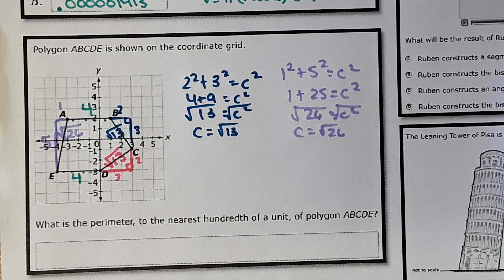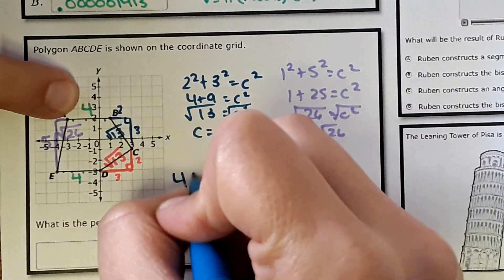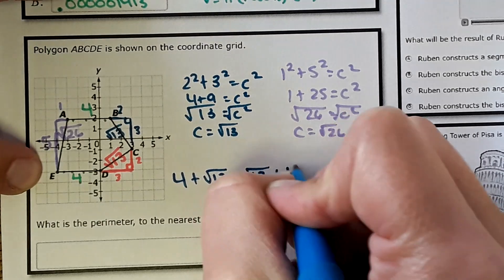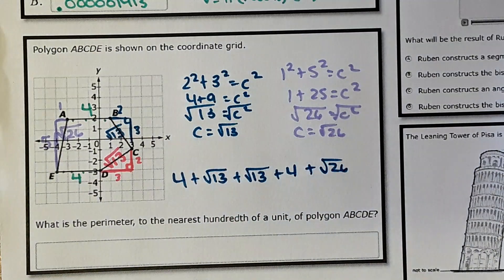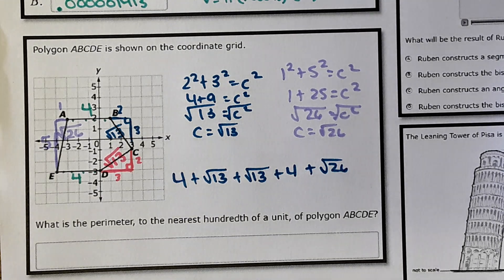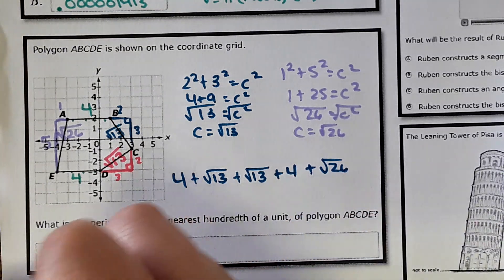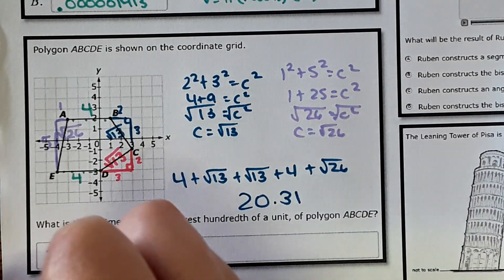Then from here, now I have the length of all the sides. I can add them up to find the perimeter. So 4 plus square root of 13 plus square root of 13 plus 4 plus square root of 26. That's fun. Try to round as little as possible. And when you add all this up, it comes out to 20.31. So you'd type that into the box.